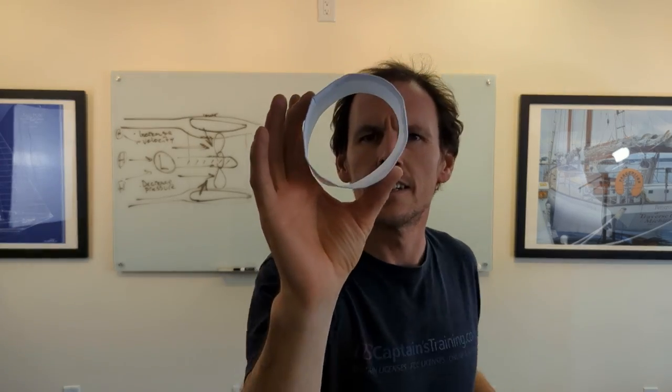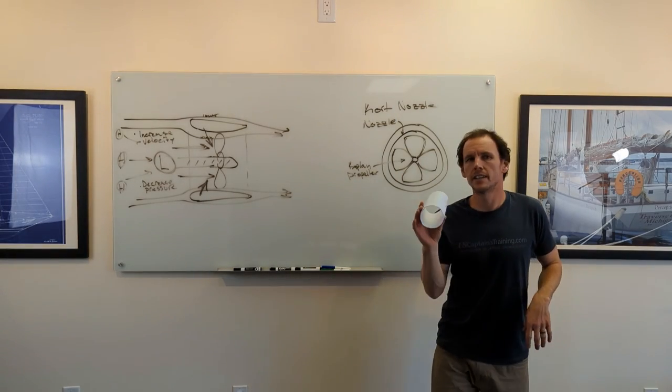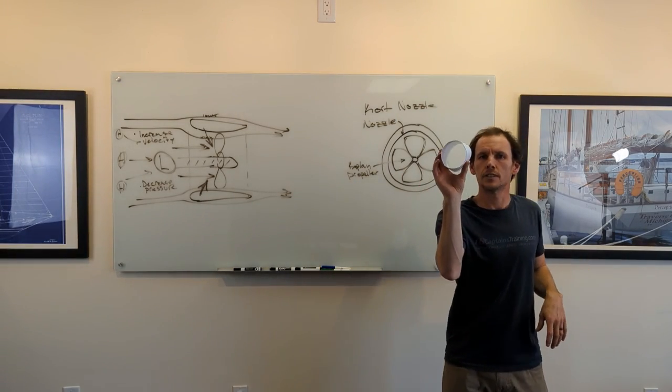So here it is. You can see it's essentially a nozzle. And if there was a propeller inside it, it would look a lot like a kort nozzle. Watch this strange plane.